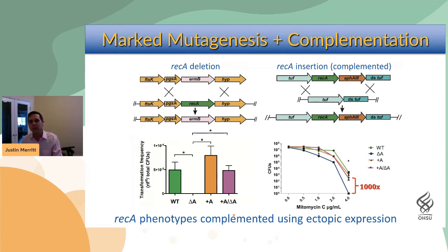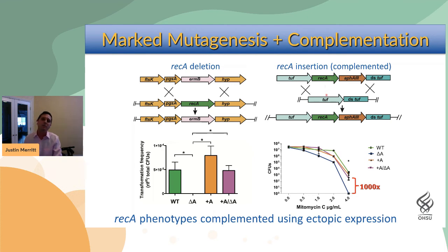We can genetically complement those phenotypes by transforming PCR products and ectopically expressing the same open reading frame. We don't even need a shuttle plasmid to do genetic complementation.